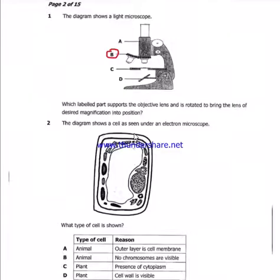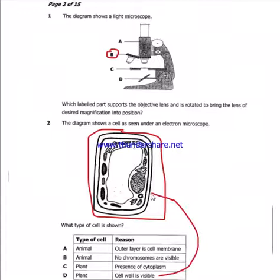Question 2: the diagram shows a cell as seen under a microscope. What type of cell is shown? Now look at this type of cell. It has got a regular shape, and you know that the cell with a regular shape is a plant cell. And what's the reason? We can't say it has got presence of cytoplasm because even an animal cell has got cytoplasm. So because the cell wall is visible, the answer is D.